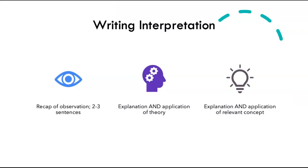So when you're writing about cognitive development, just as you would write about any other interpretation, observation that you would interpret, you would recap the observation in short two to three sentences. You would explain and apply a particular theory, in this case Vygotsky's theory, and you would explain and apply a relevant concept, in this case that of problem-solving.